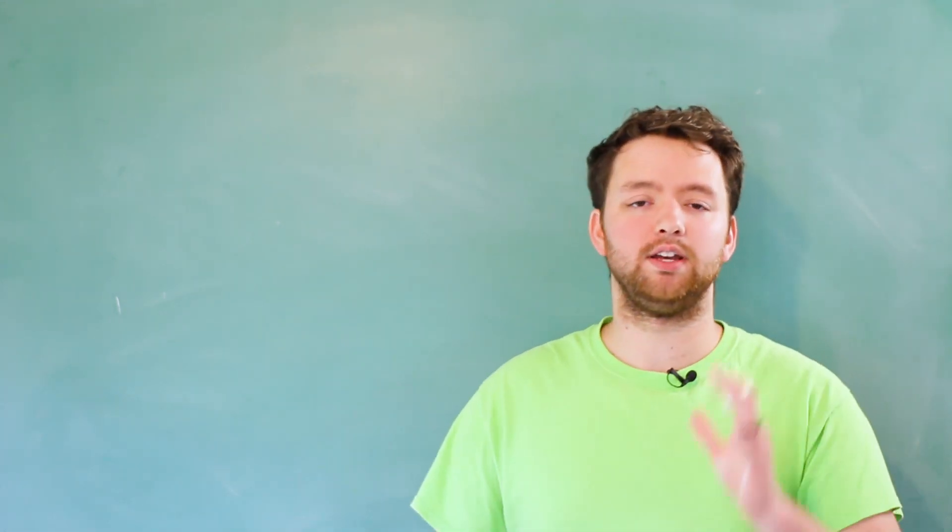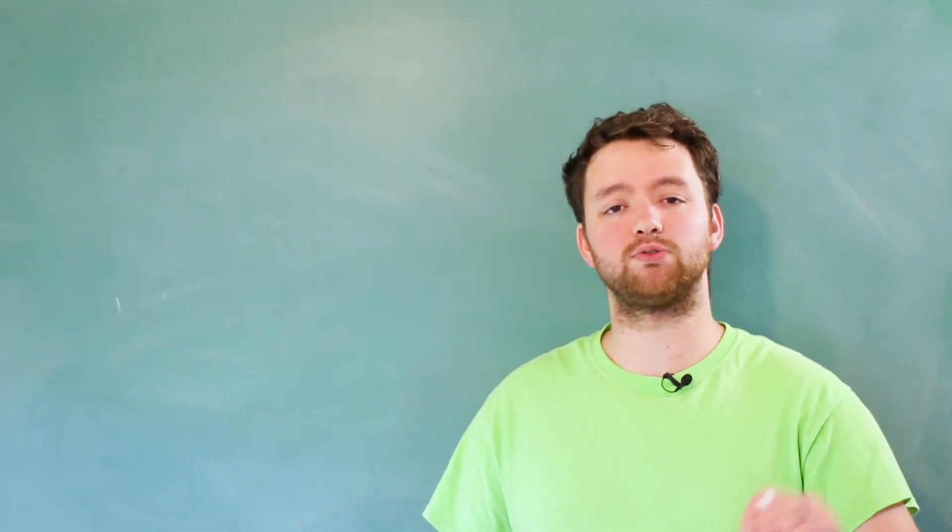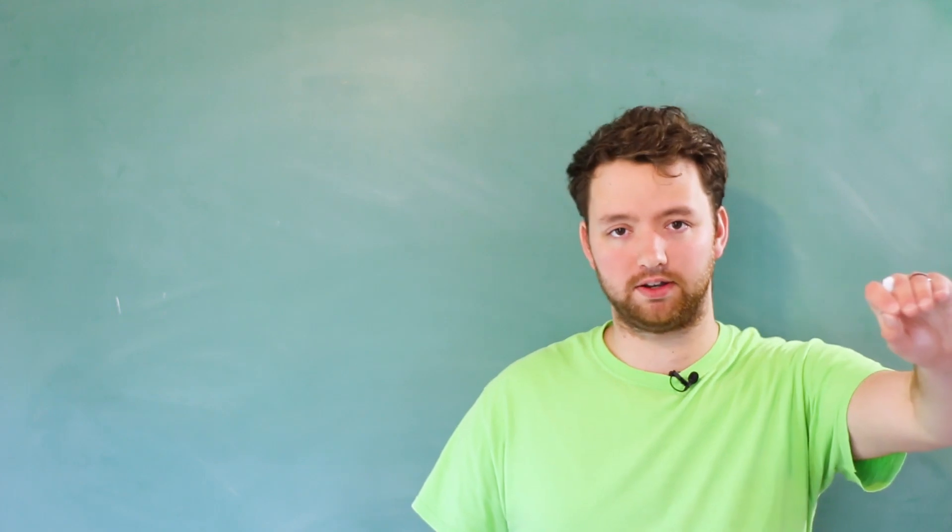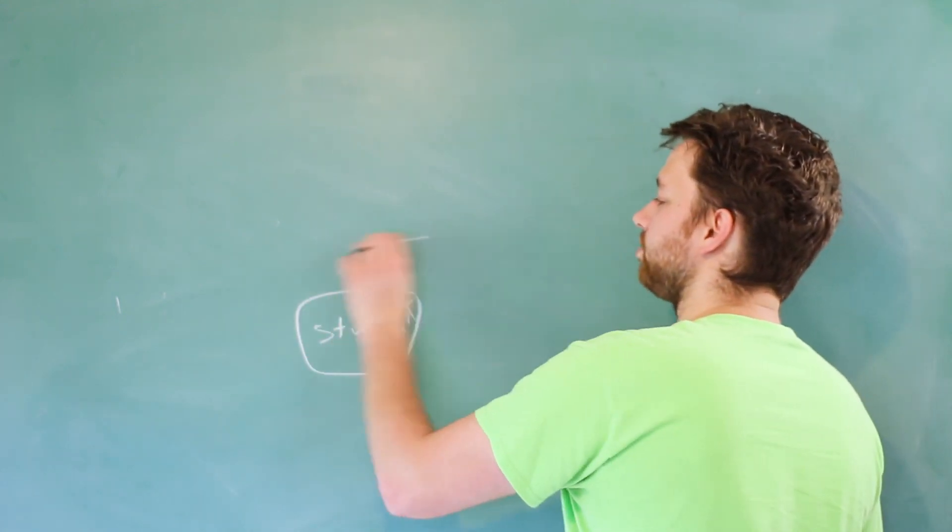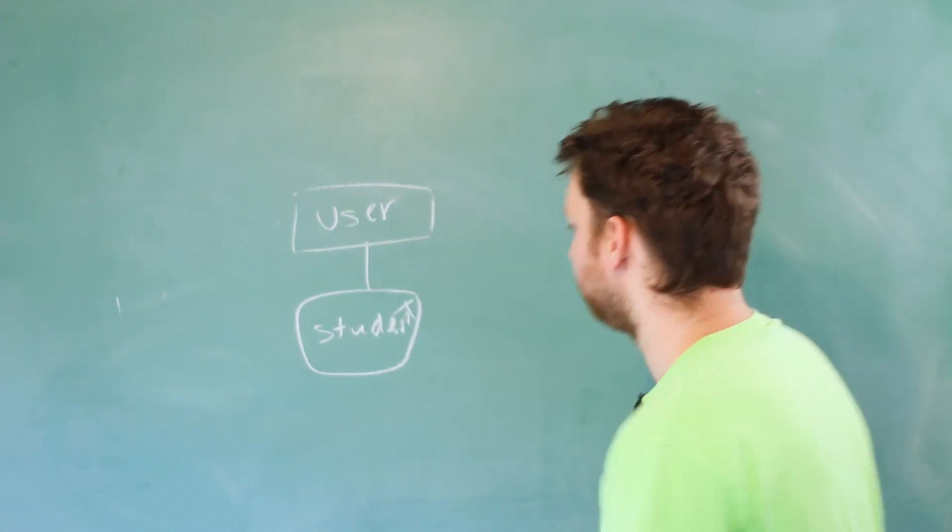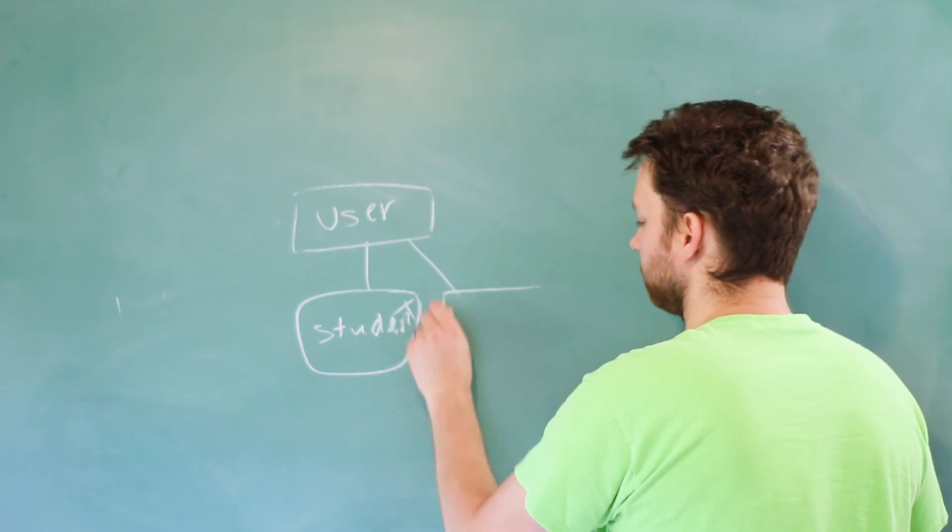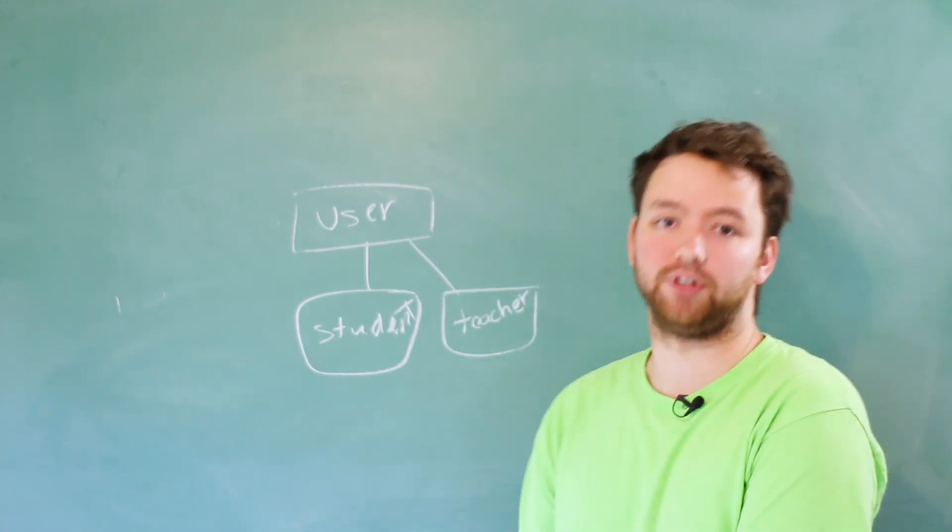When we're talking about JavaScript, an object can be treated as the type of whatever it is, or it can be treated as the type of its parent or its parent's parent. So if we have a student, we can also consider this student to be a user, which makes sense. Both students and teachers are users, at least in our inheritance hierarchy for this particular application.